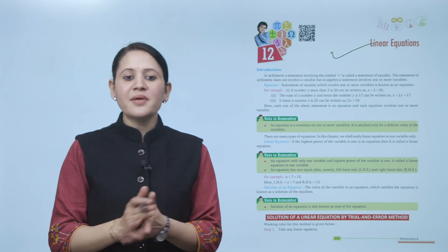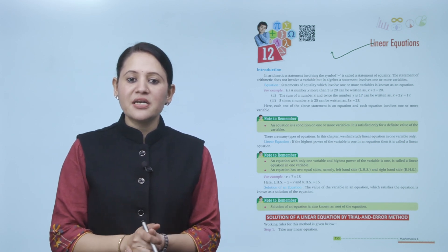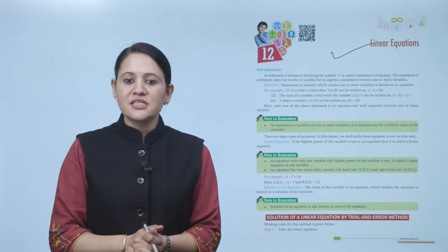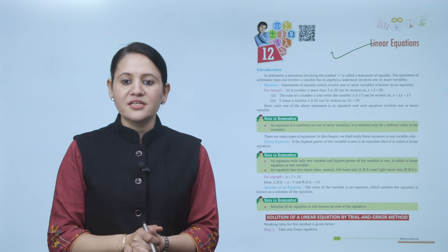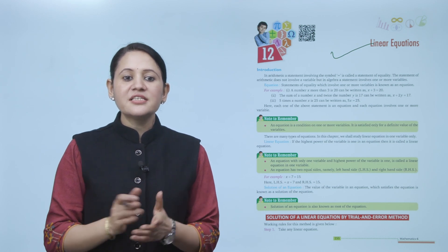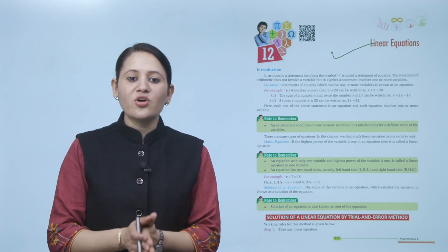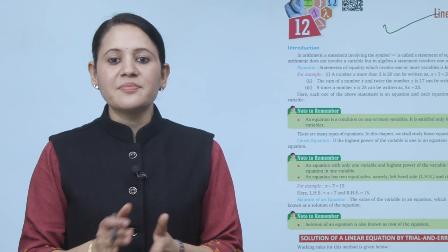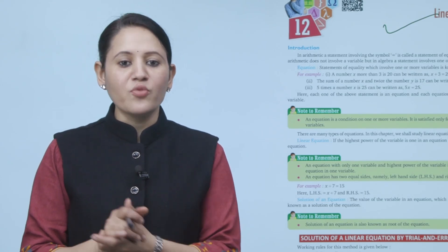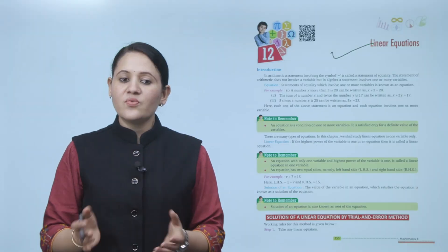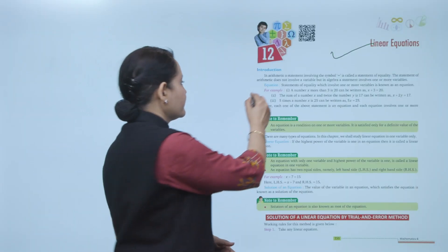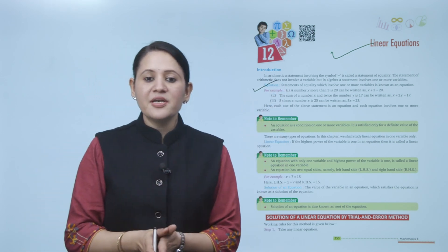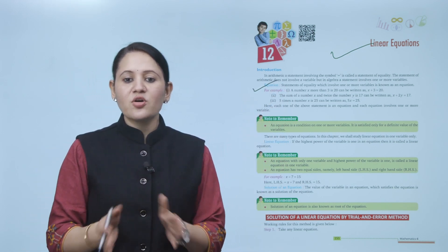An arithmetic statement involving the symbol 'equal' is called a statement of equality. An arithmetic statement does not involve a variable, but in algebra, statements involve one or more variables. An equation is a statement of equality which involves one or more variables.